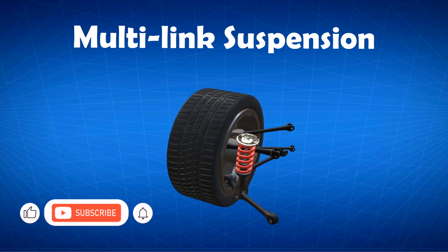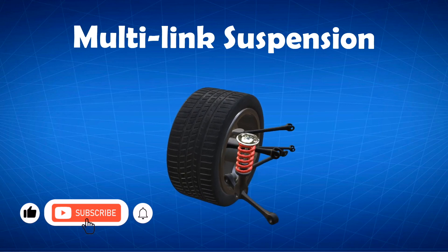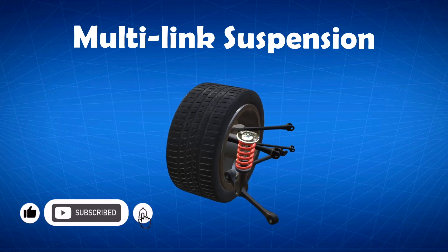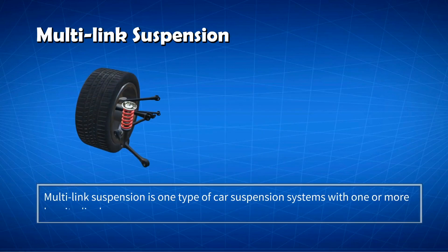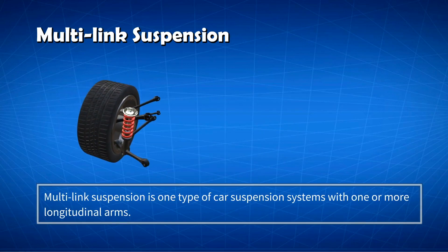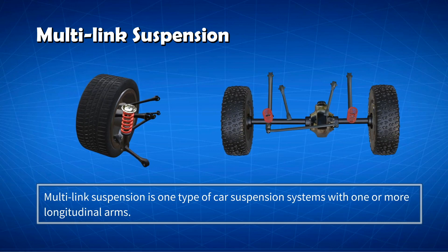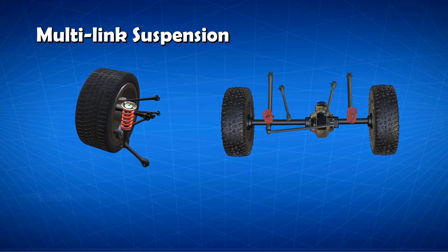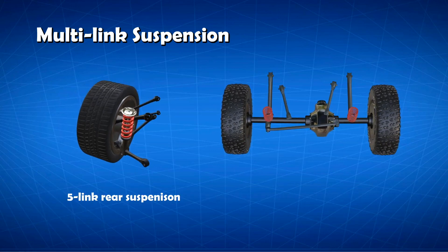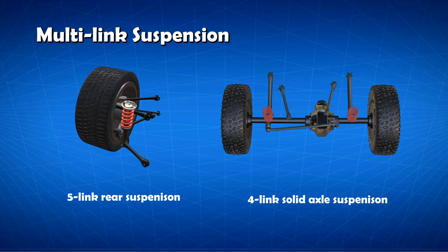Multilink suspension is one type of car suspension systems, with one or more longitudinal arms. In a broader definition, a multilink suspension can be considered as a suspension system with three control links or more multilinks.